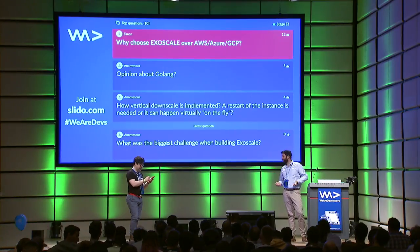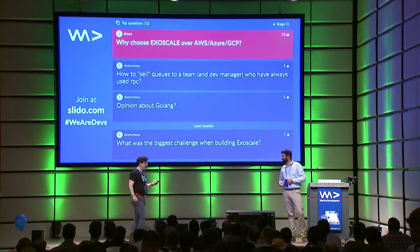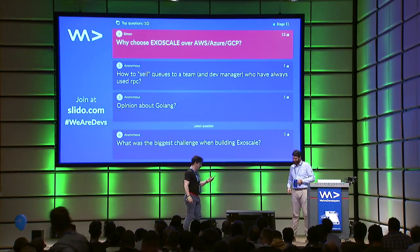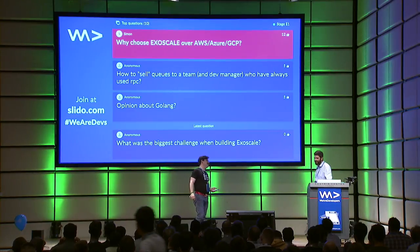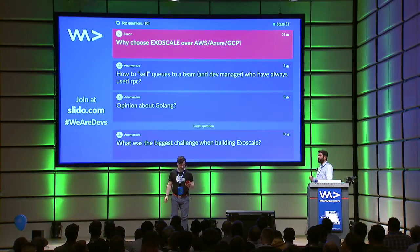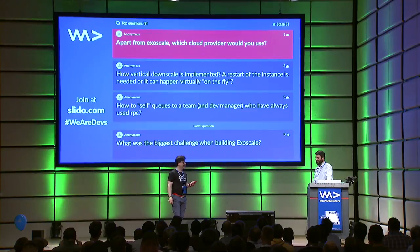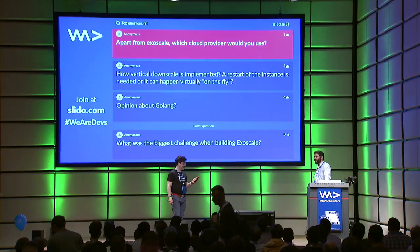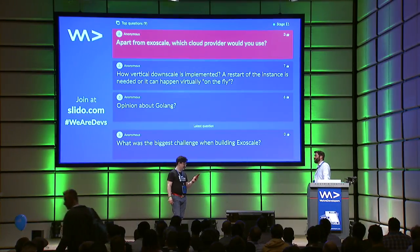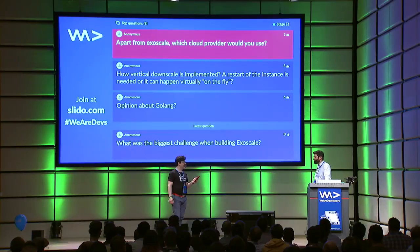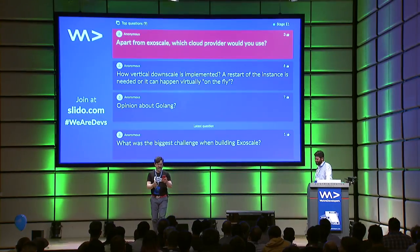Q: If you weren't allowed to use Exoscale, which cloud provider would you use? A: I'm a bad user in that sense — I would probably start building it again. But if forced to choose, I would most likely go to a Kubernetes offering directly, maybe on DigitalOcean, and build from there. Kubernetes on something as a service.